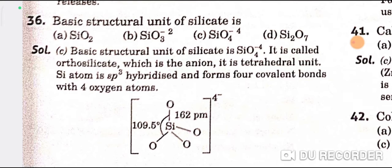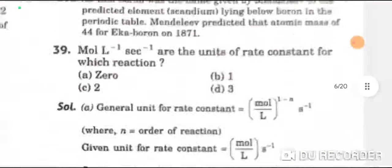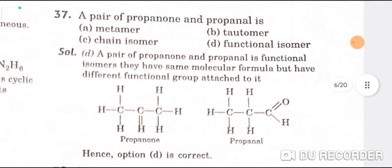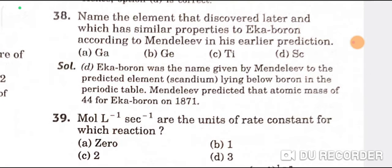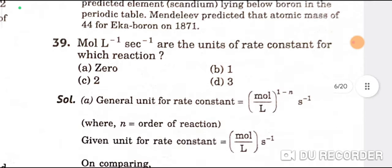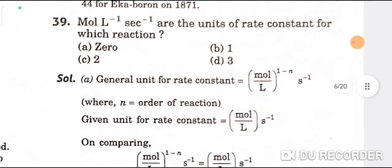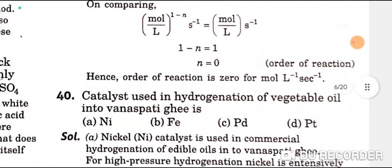The basic structural unit of silicates is SiO4 — C is the correct option. A pair of propanone and propanol is a functional isomer — D is the correct option. The element discovered later with similar properties to eka-boron according to Mendeleev is scandium — D is the correct option. Mole per liter per second are the units of rate constant for a zeroth order reaction — A is the correct option.